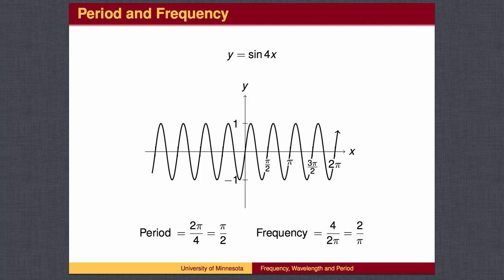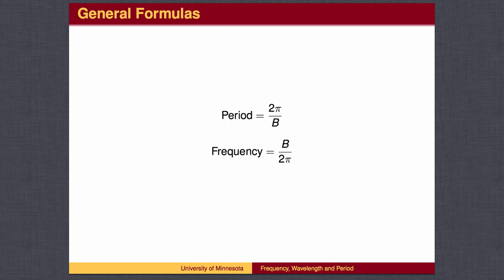The frequency in this example is 4 over 2 pi. In general, the frequency is b divided by 2 pi. Here are the formulas for period and frequency.